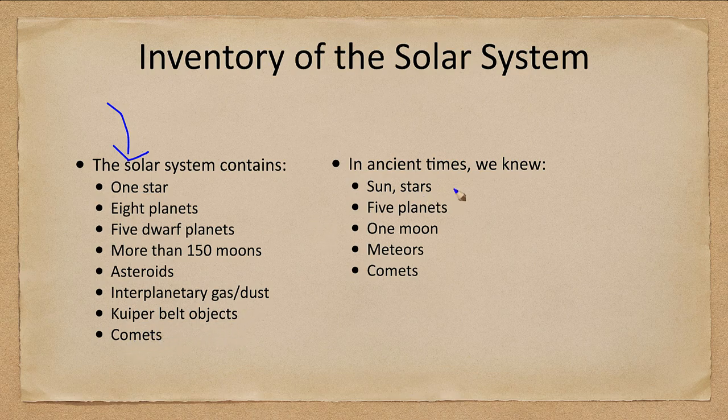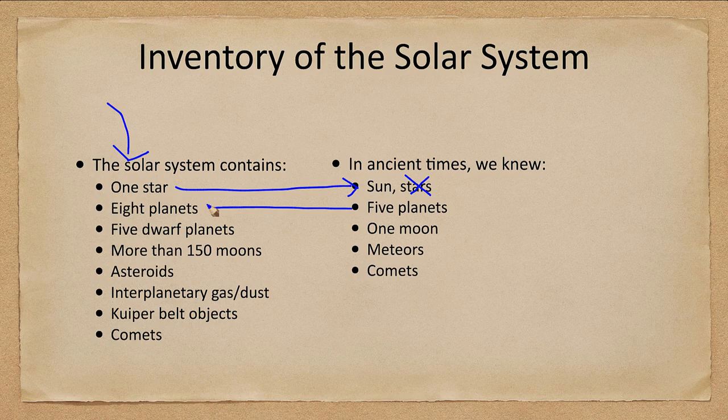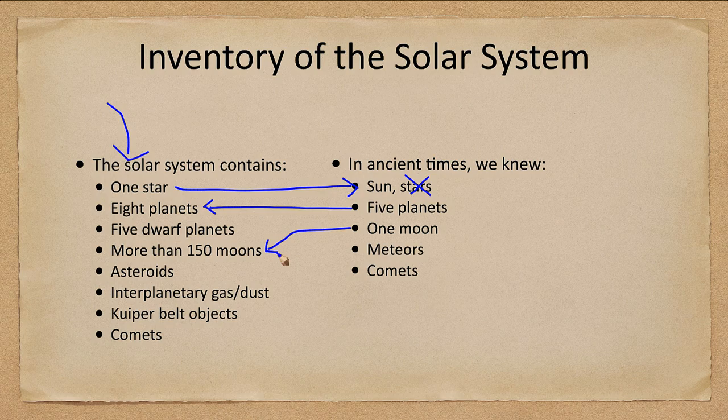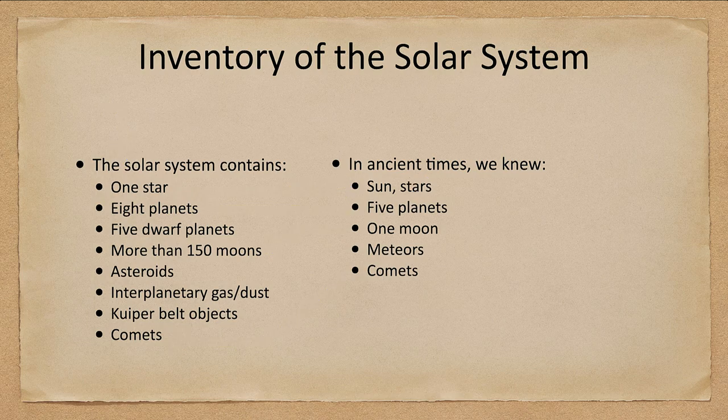Now in ancient times this was quite different. We thought that stars were part of the solar system which we now know they aren't. The one star that is is our sun. The number of planets has increased from five to eight. The one moon that was known has now multiplied to over 150. Meteors really are within our atmosphere. Comets were known however. So you can see how many new things have been discovered since ancient times.